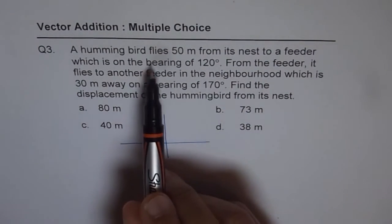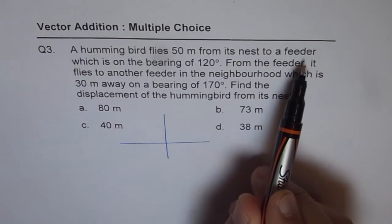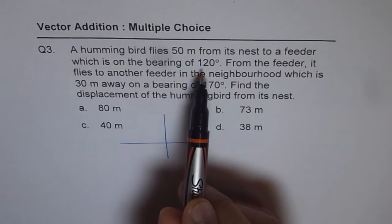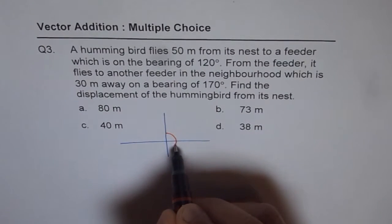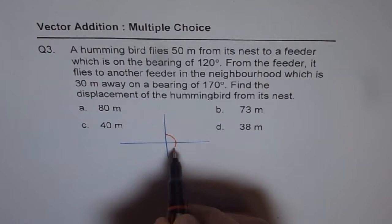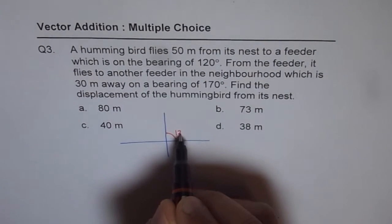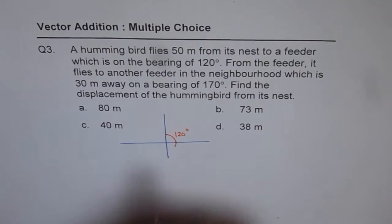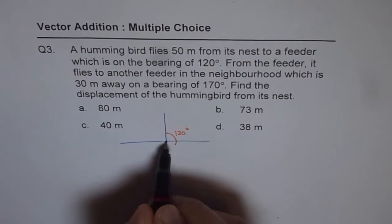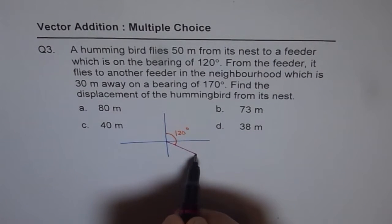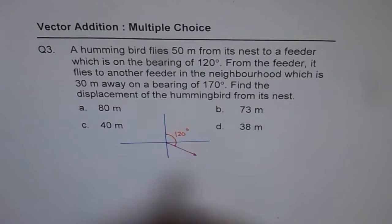A hummingbird flies 50 meters from its nest to a feeder which is on a bearing of 120 degrees. 120 is 90 plus 30. So, it is like 90 and then one third. That is 120 degrees. This is bearing of 120 degrees. Let us draw 50 meters as this left, representing 50 meters from origin.